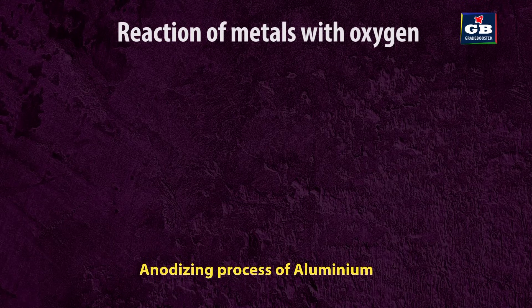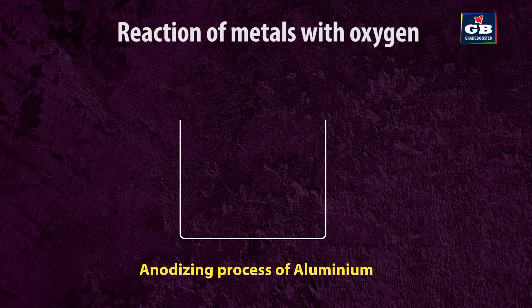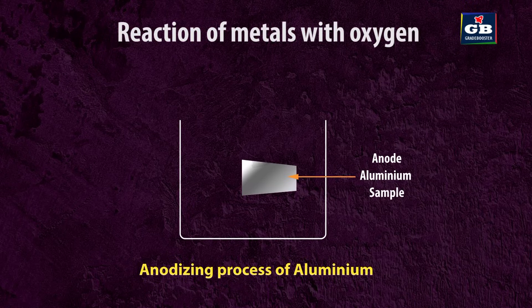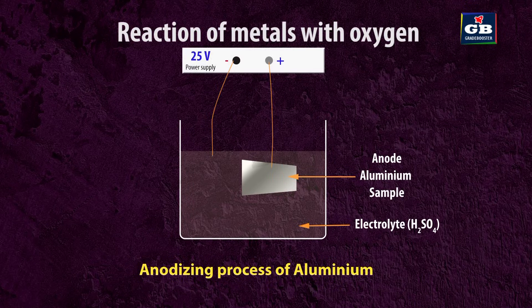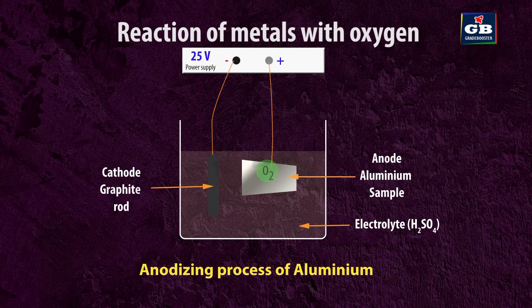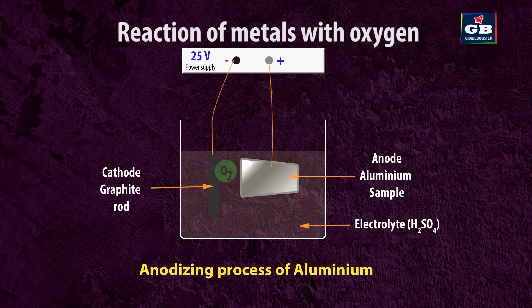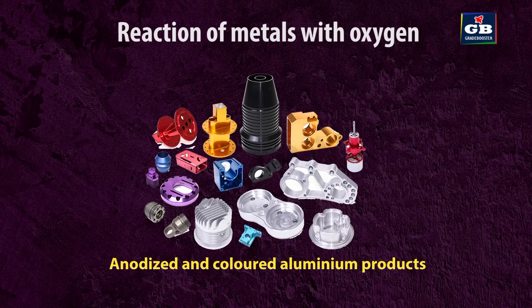Anodizing process: A clean piece of aluminium is taken. The aluminium piece is placed in a solution of dilute sulfuric acid and connected to an electrical circuit as the anode (positive electrode). When electricity flows through the solution, oxygen gas is produced at the surface of the aluminium. This oxygen reacts with the aluminium to form a thicker oxide layer, which can be dyed in various colors to give the aluminium an attractive finish.